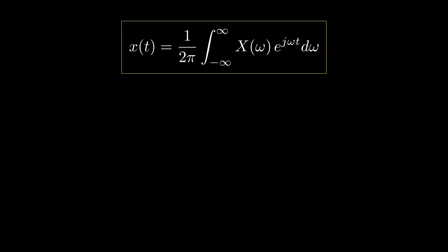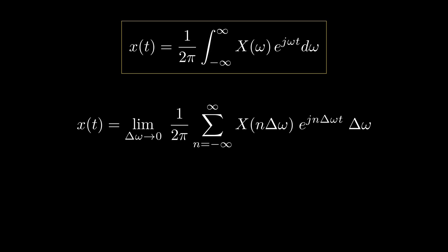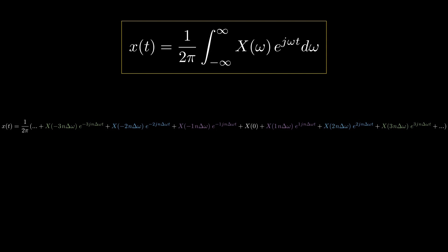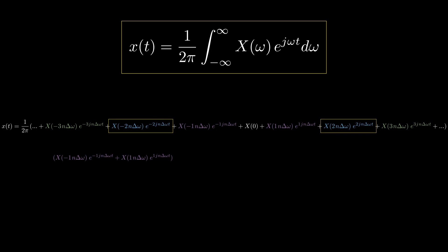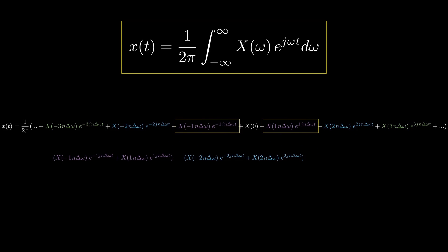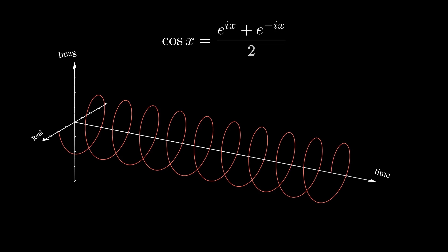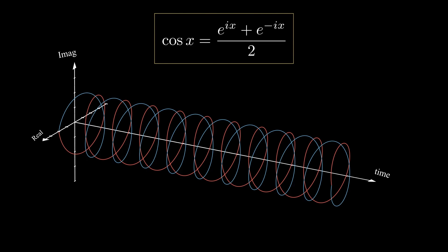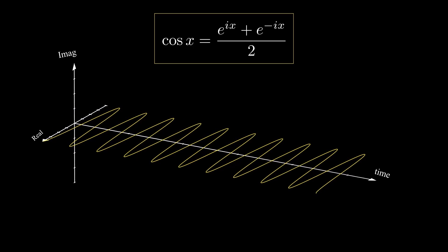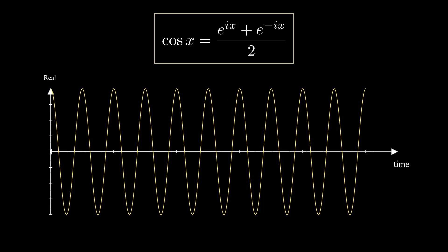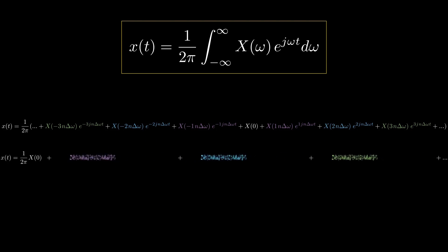From the inverse Fourier transform integral, any time domain signal can be decomposed into a linear combination of complex exponentials of all frequencies from minus infinity to plus infinity. For real valued functions, we can treat these complex exponentials as pairs having positive and negative frequencies. Recalling Euler's formula, when adding two complex exponentials with opposite frequencies, the imaginary part vanishes and we are left with a real sinusoid with double amplitude, oscillating with the same frequency. So any time domain real valued signal can be decomposed into a linear combination of sinusoids.